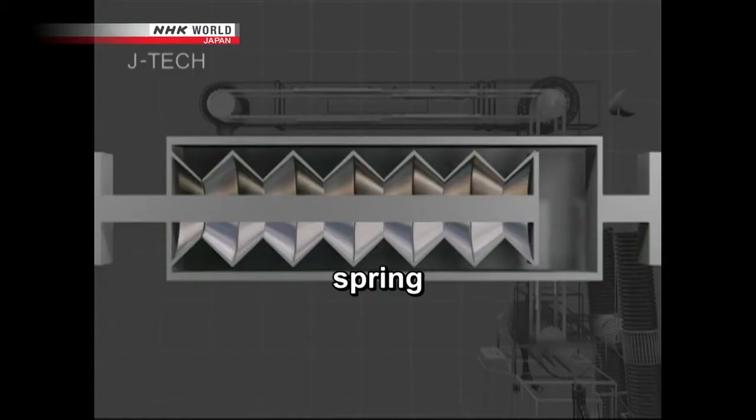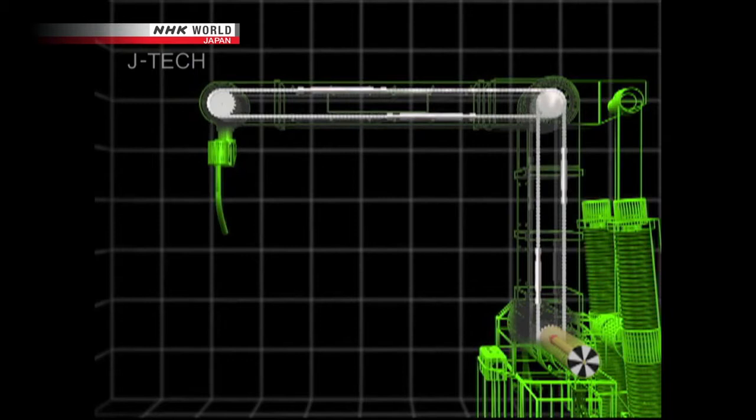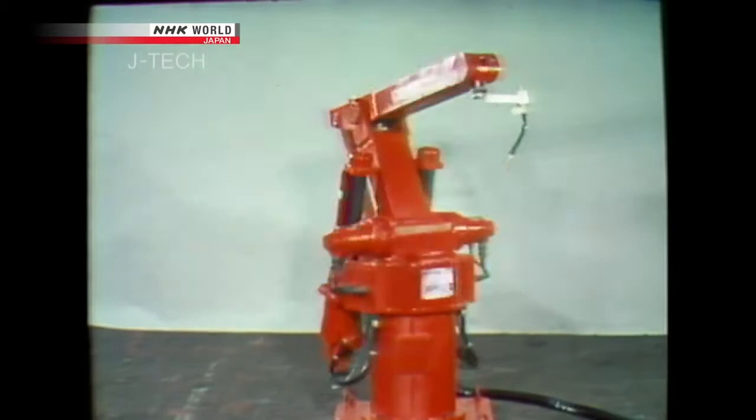Then he thought of adding springs within the chain links. Any slack in the chain would be taken out by the springs. It was a brilliant idea and led to the launch in January 1977 of the company's flagship product and Japan's first commercially produced all-electric welding robot, the Motoman L10.